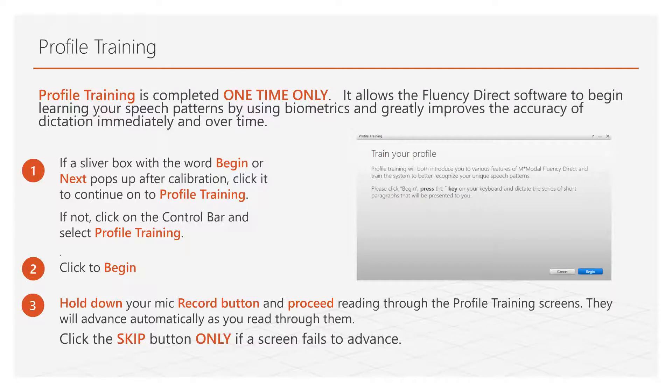Proceed to read aloud through the next set of screens. They each have a brief sentence or paragraph with important information on how to utilize Fluency Direct. Read through these in a natural manner and speed. The screen should highlight and advance automatically. This usually takes approximately five minutes. Come back to this training after you have completed the profile training.